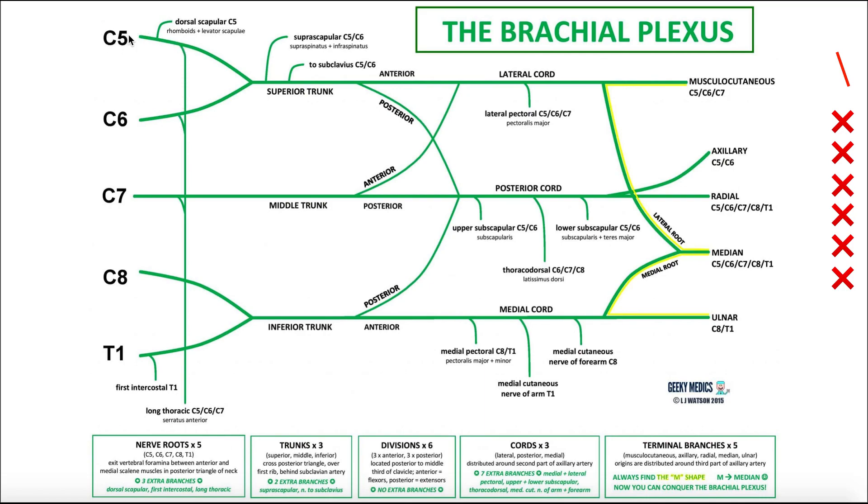In other words, if there was a C5 radiculopathy, it would affect the long thoracic nerve. If there was a C6 radiculopathy, it would also affect the long thoracic nerve, because those contributions come directly off of those nerve roots.